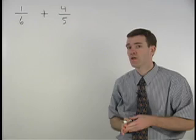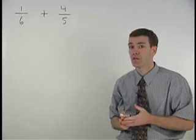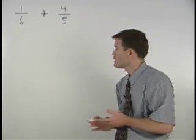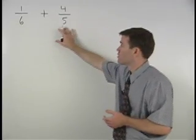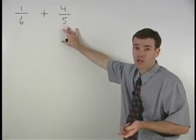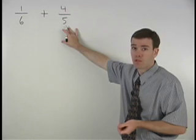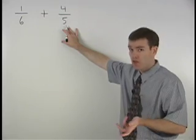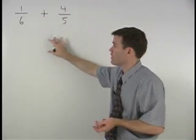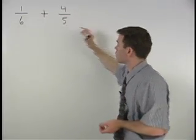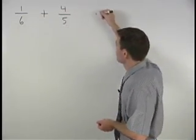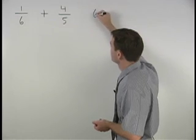The common denominator is simply the least common multiple for the two denominators. So our first step is to find the least common multiple for six and five.